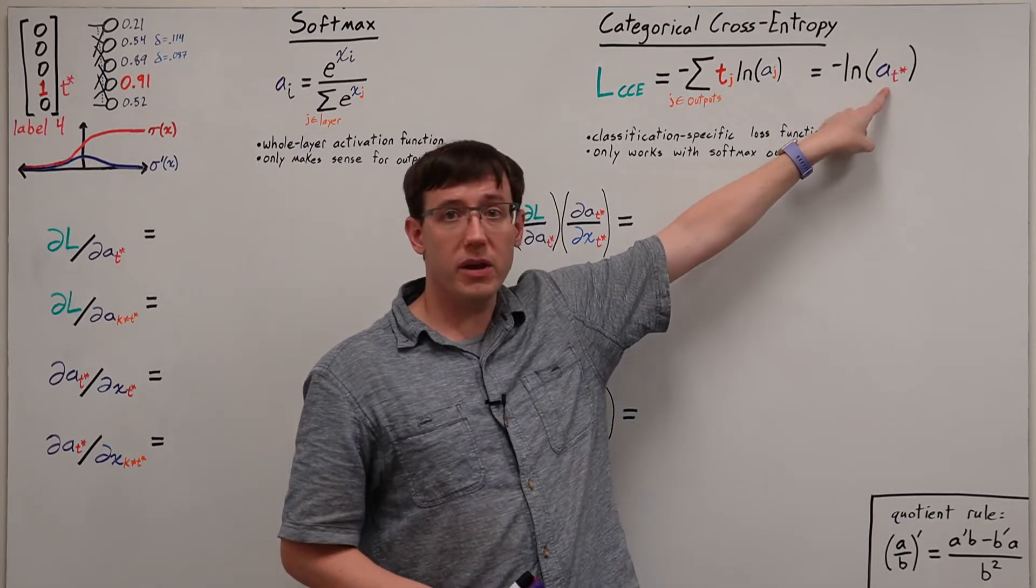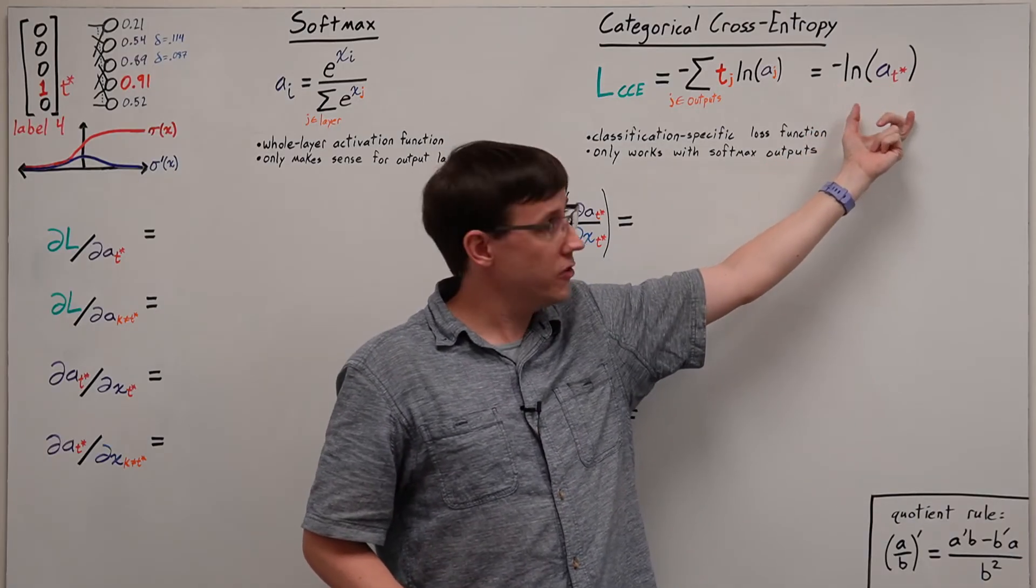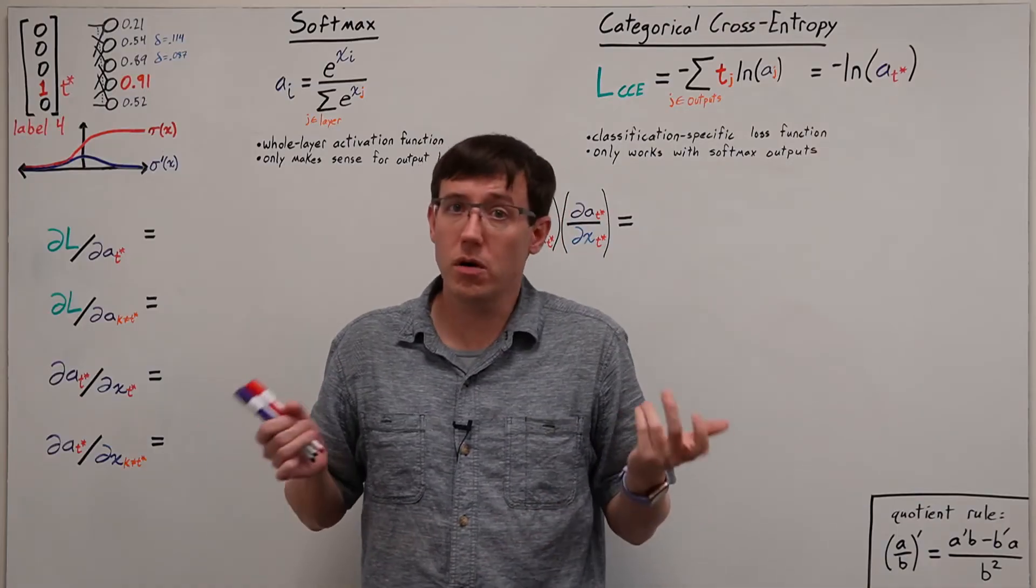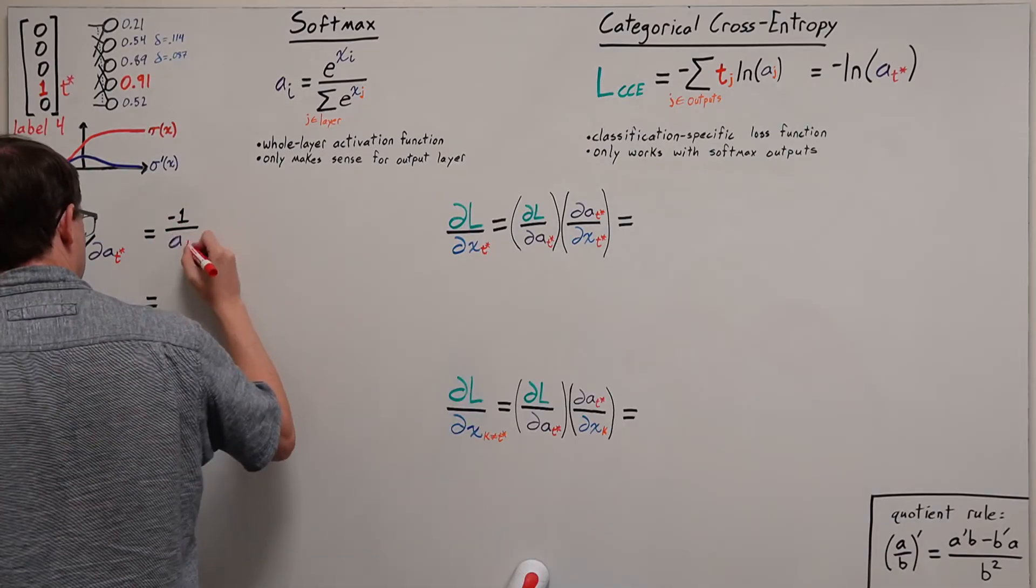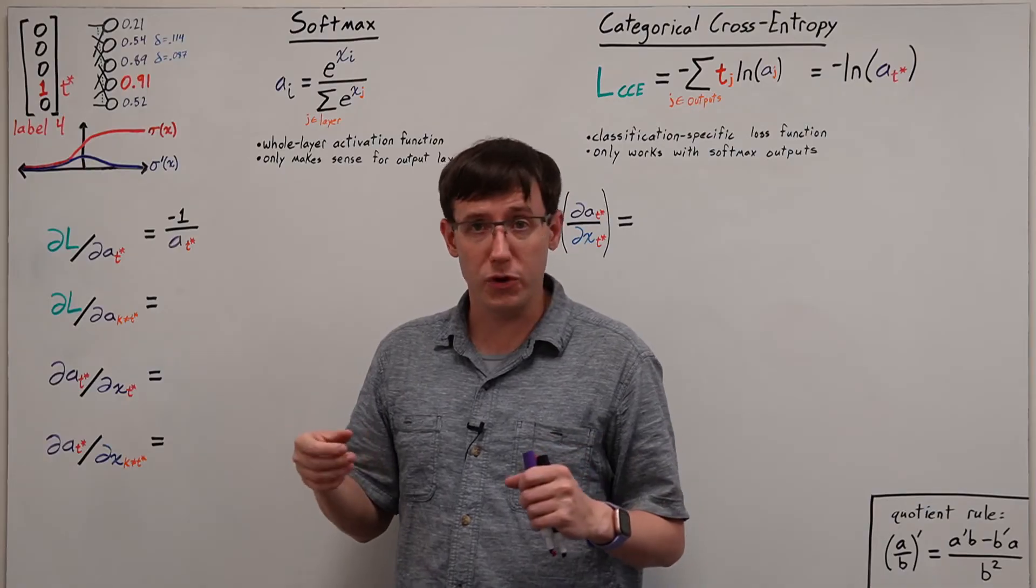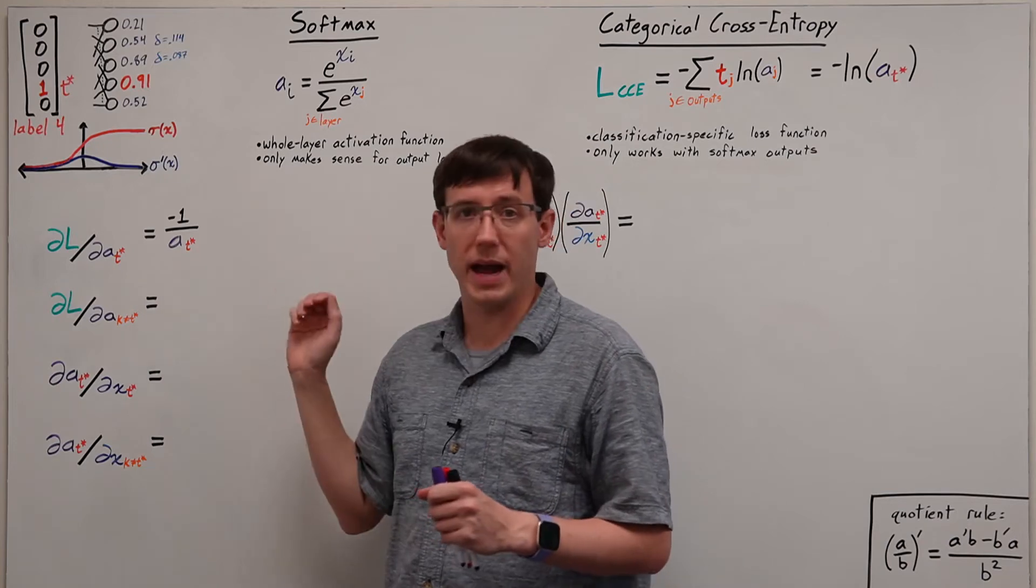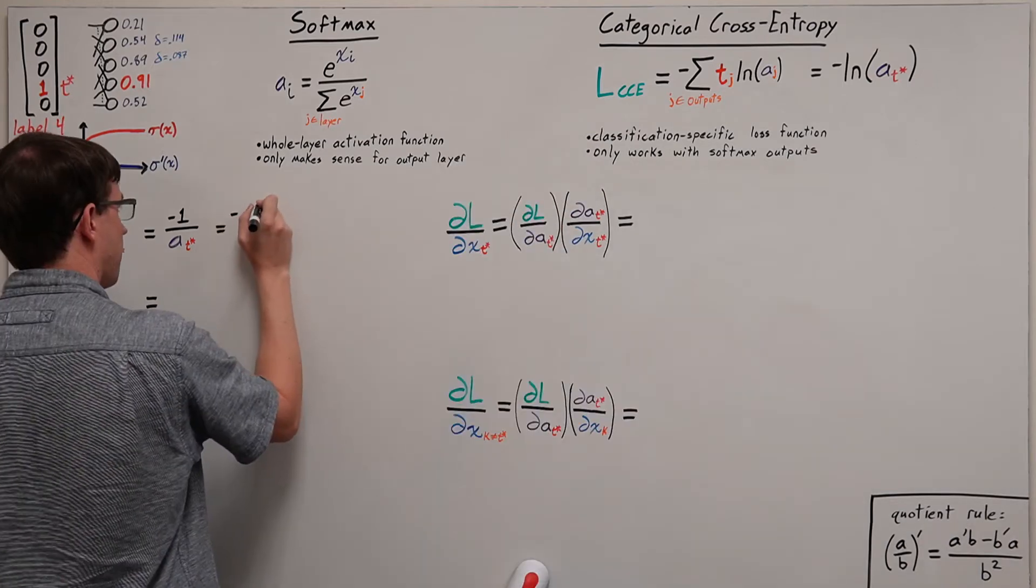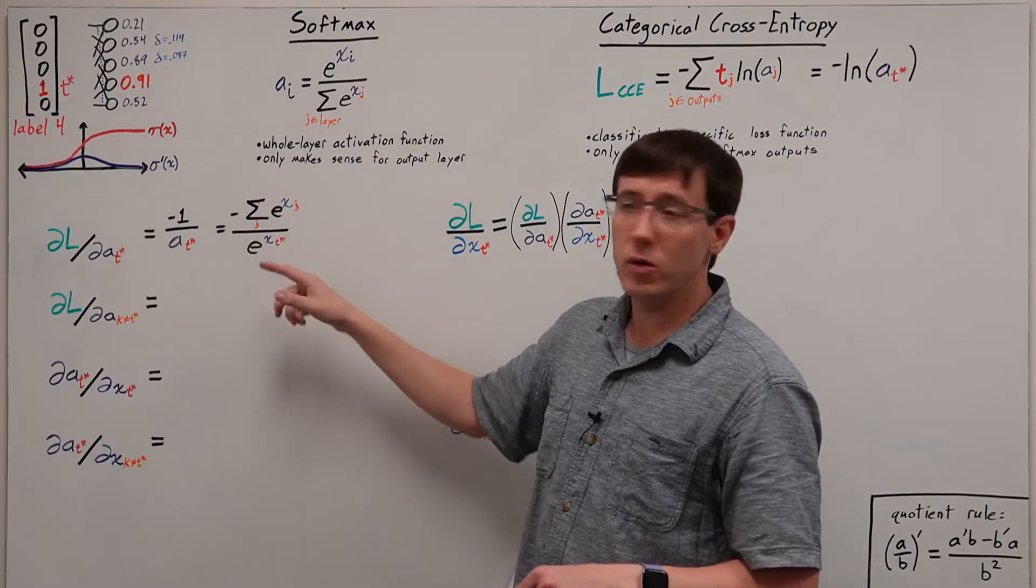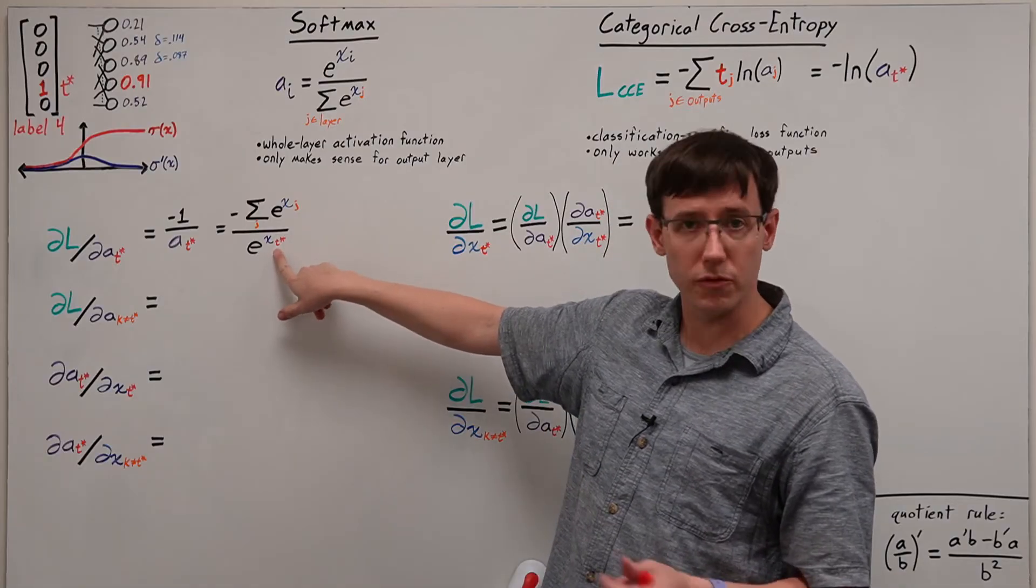Well, that labels activation appears right here, and so we are taking the derivative of this function with respect to its input. And the derivative of the natural log is 1 over x. So we get minus 1 over the activation, but in a moment it will help to have plugged in our formula for that activation, so let's do that now. And we get minus the inverse of this fraction with T star plugged in for the node.